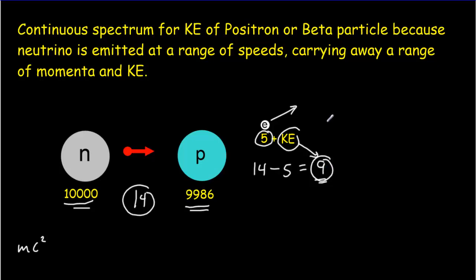When scientists started measuring the kinetic energy of those emitted electrons, they didn't get the value of 9. They got a range of values that went anywhere from 0 all the way to 9 in a continuous spectrum. And that was a surprise.